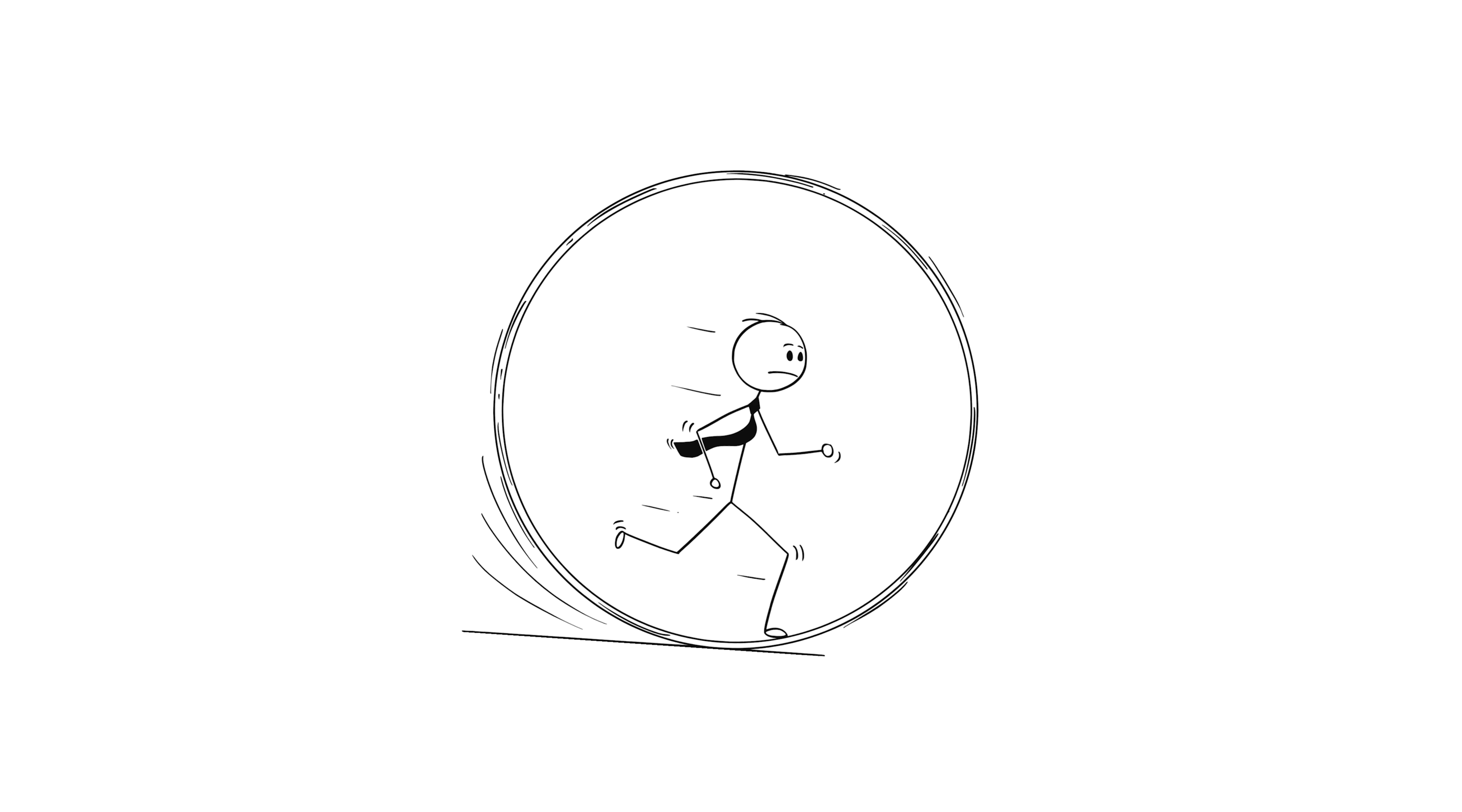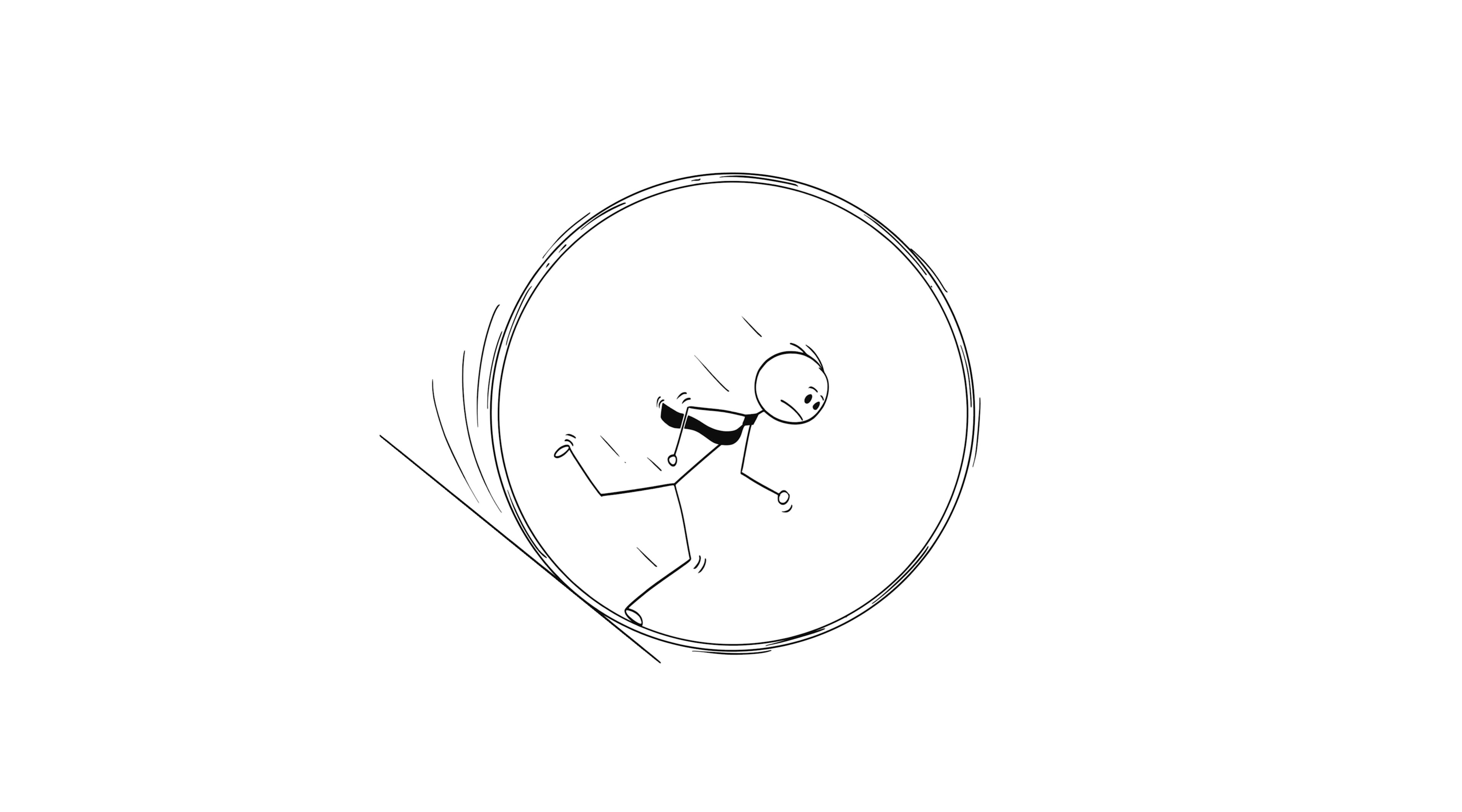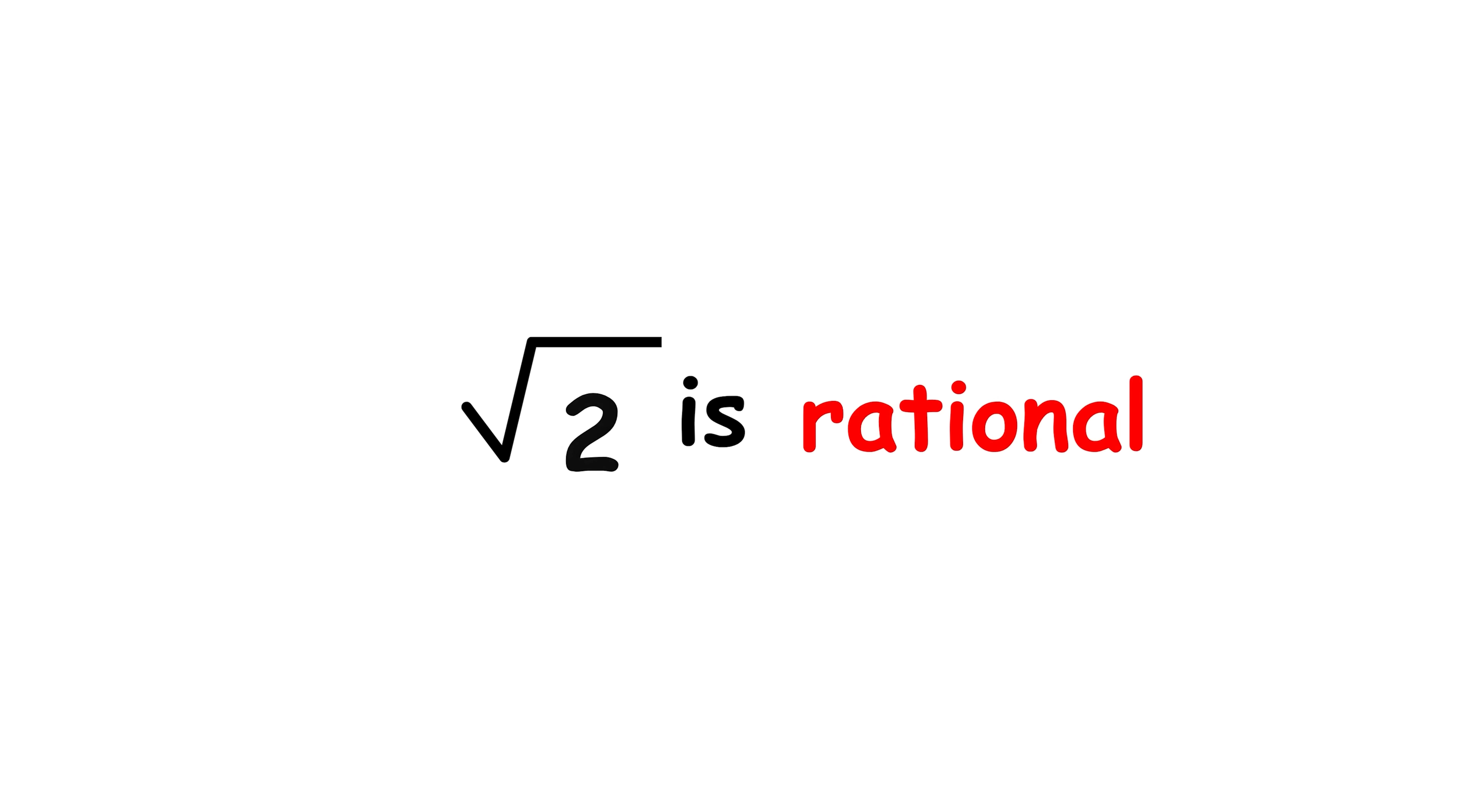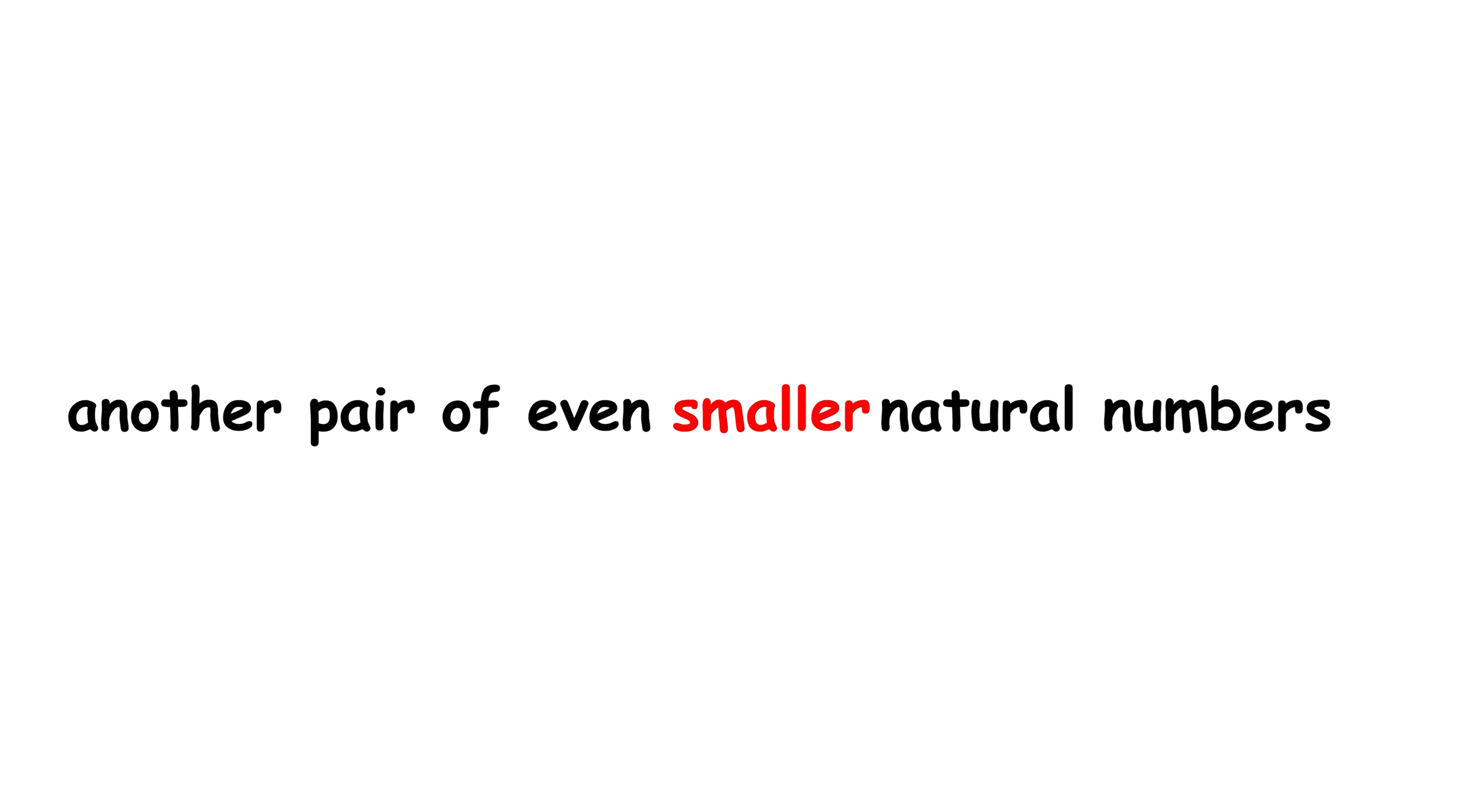From here, we can just repeat the same process that we just did, with the new numerator and denominator serving as the new a and b. Using only the logic of our own assumption that square root 2 is rational, we can generate yet another pair of even smaller natural numbers, whose ratio is again equal to square root 2.